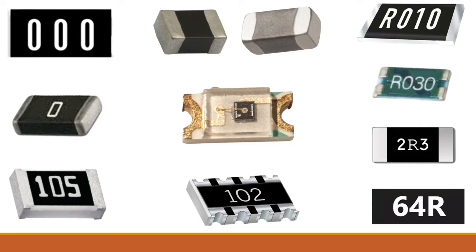In this video we're going to see the types of SMT resistors. Here we have many types of resistors. This resistor is a current sense resistor, this also is a current sense resistor. The value of this resistor is 0.01 ohms, and for this one we have R030 so its value is 0.03 ohms. The 'R' refers to a decimal point.